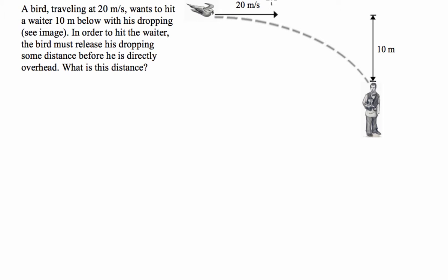So we are given the speed of the bird. What we're not given is the time it's going to take the dropping to fall from the bird and hit the waiter's head through a vertical distance of 10 metres. So we're going to figure that out first. We're going to say, okay, if the bird was here and hovering, what would the time take for the poo to go from here and hit the waiter on the head?